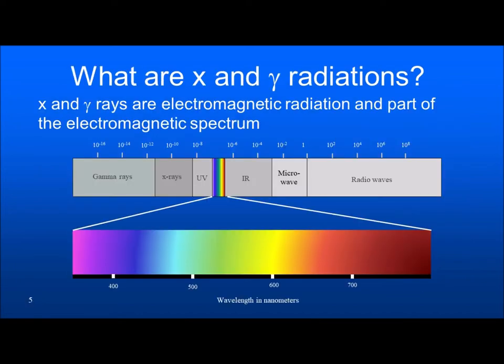Let us now move on to X-rays and gamma radiation. If someone asks what are X-rays and what are gamma rays, the answer is: X-rays and gamma rays are electromagnetic radiation and they are part of the electromagnetic spectrum. The electromagnetic spectrum starts with radio waves, microwaves, goes on to infrared, visible, ultraviolet, and then X-rays and gamma rays.